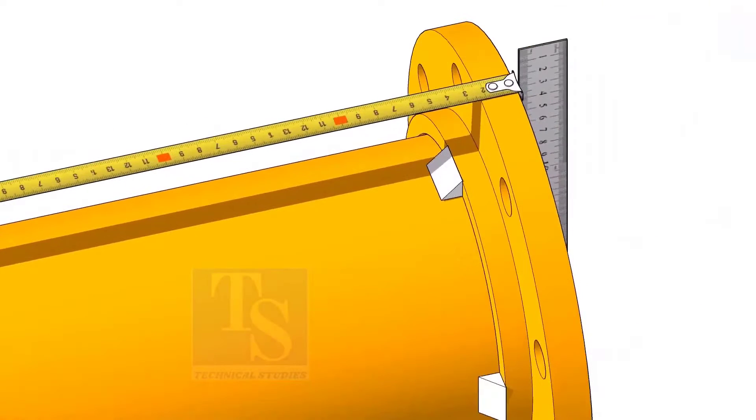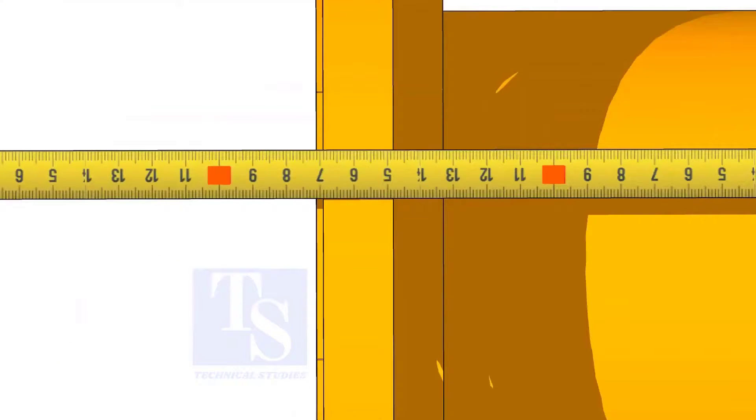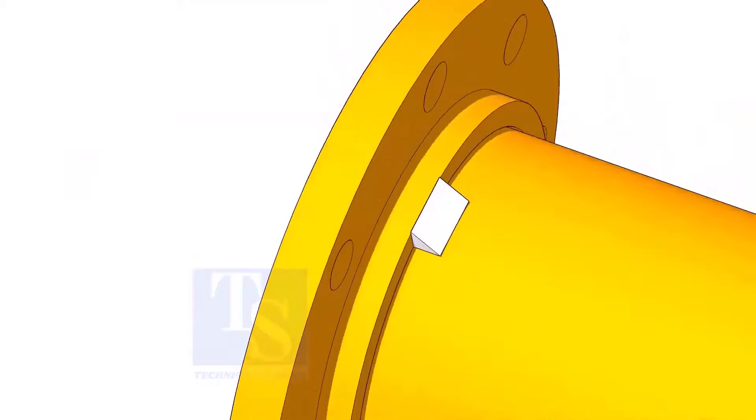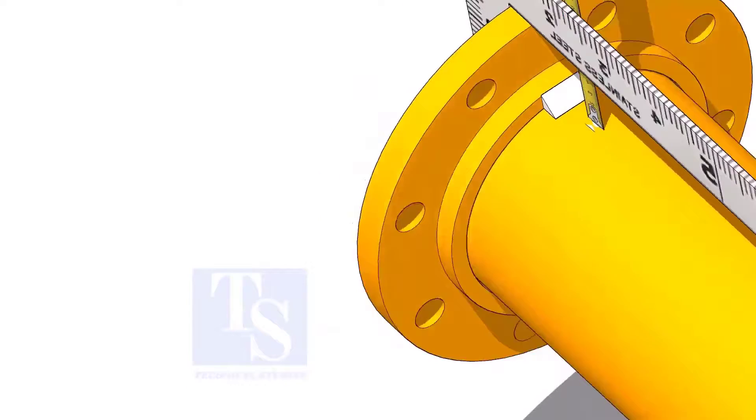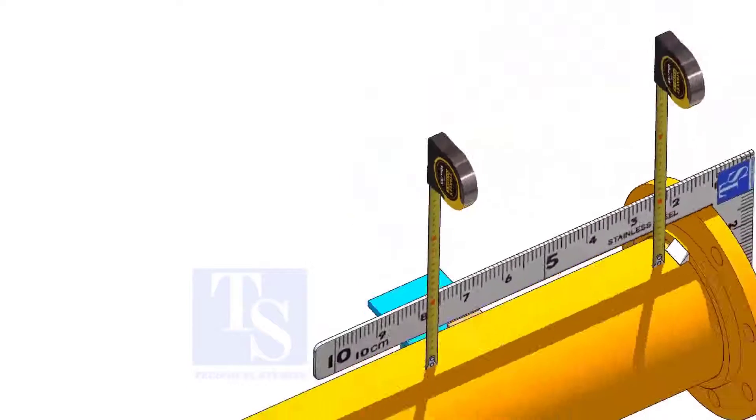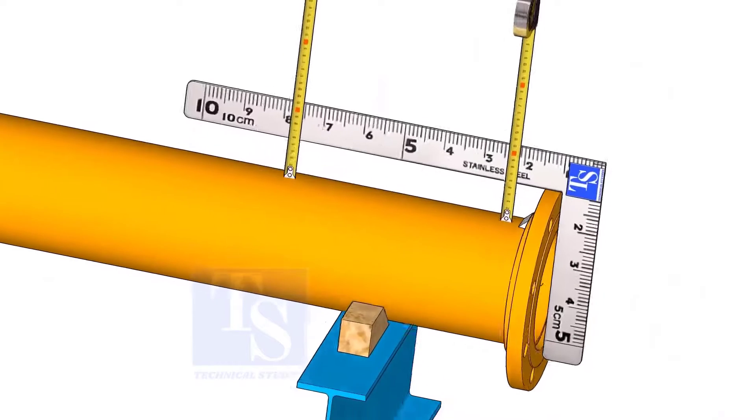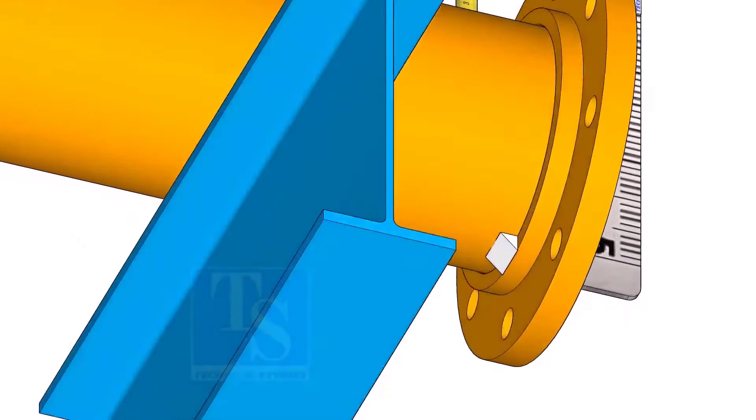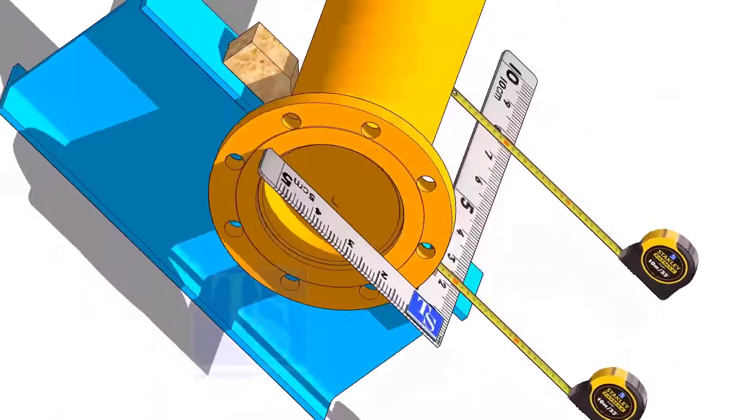Hold scale rulers on both flange faces and check the length of the spool. Tack weld on the top side of the pipe. Correct the squareness and tack weld at the bottom side. Square the flange and tack weld on both sides.